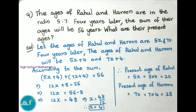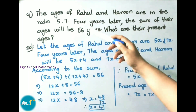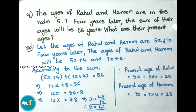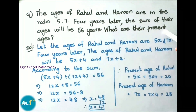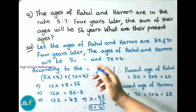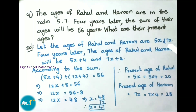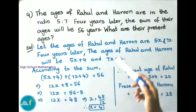See now question number 9: the ages of Rahul and Harul are in the ratio 5 is to 7. 4 years later their age sum will be 56. What are their present ages? Let the ages of Rahul and Harul be 5x and 7x. 4 years later the ages of Rahul and Harul will be 5x plus 4 and 7x plus 4.